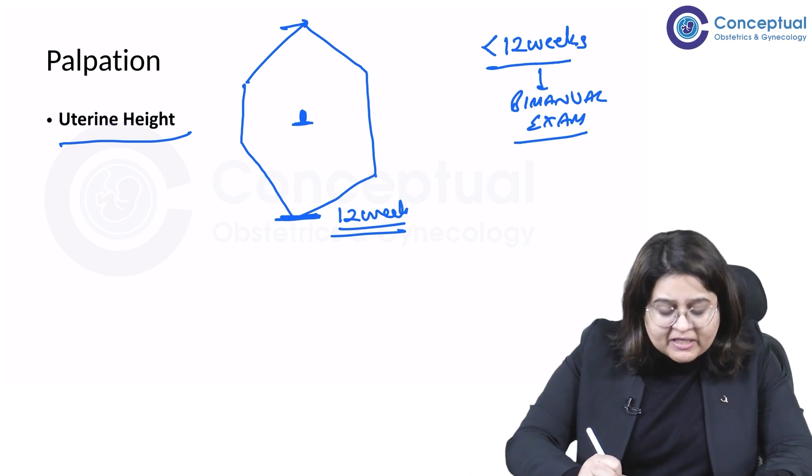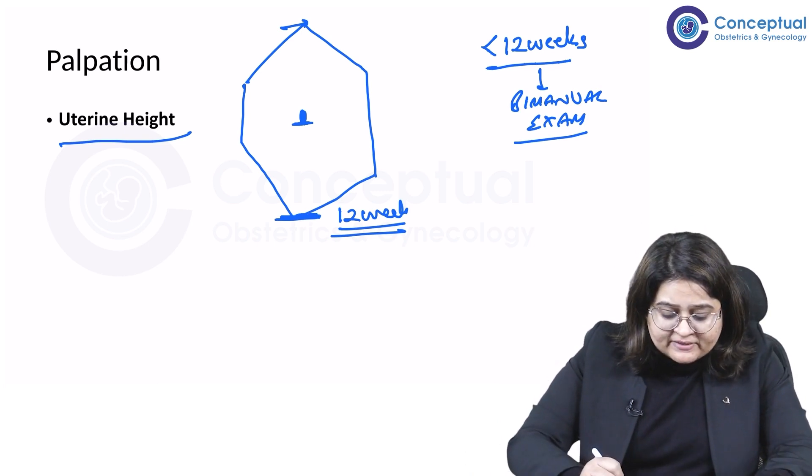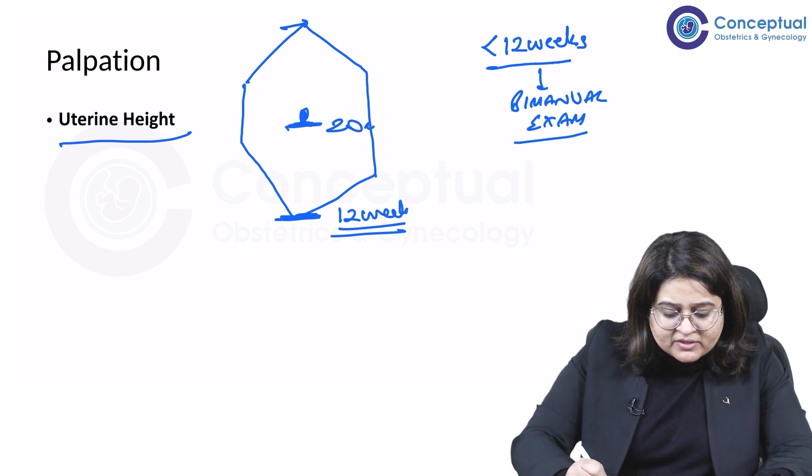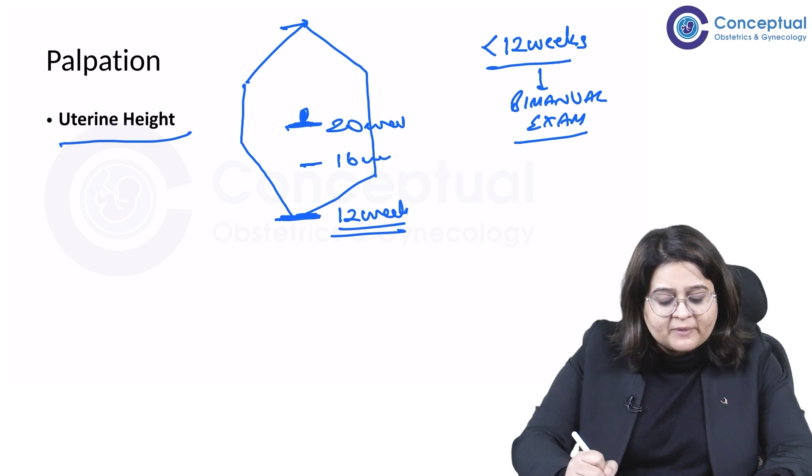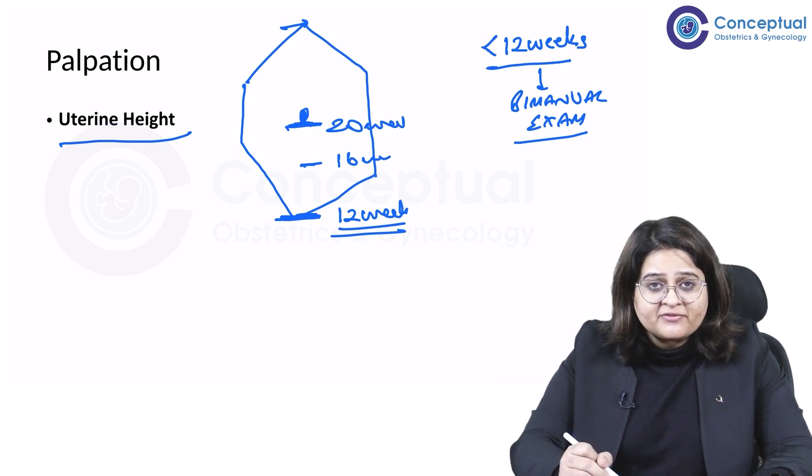The uterus will be enlarged, it will be more than normal, but it won't be palpable per abdomen. So then we do a bimanual exam to see the height or the size of the uterus. So at 12 weeks, it becomes palpable.